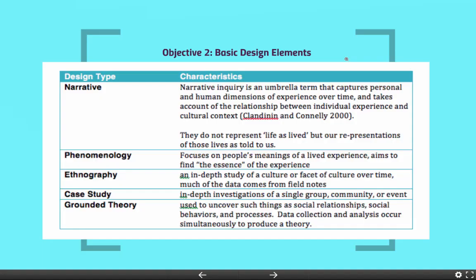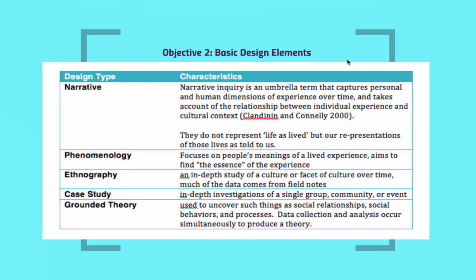Let's look at some of the most popular designs for qualitative research. Cresswell states that the five most common types are narrative, phenomenology, ethnography, case study, and grounded theory. In a narrative type design, you're going to capture personal and human dimensions of experience over time and take account of the relationship between individual experience and cultural context. The purpose of a narrative design is not to represent life as lived, but our re-presentation of those lives as told to us. In phenomenology, we focus on people's meanings of a lived experience, and our goal is to find the essence of that experience.